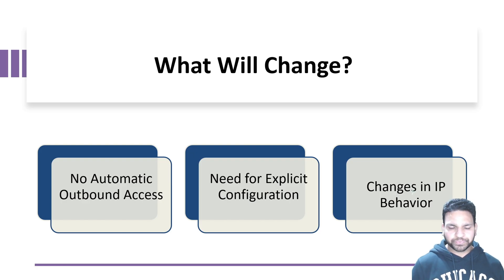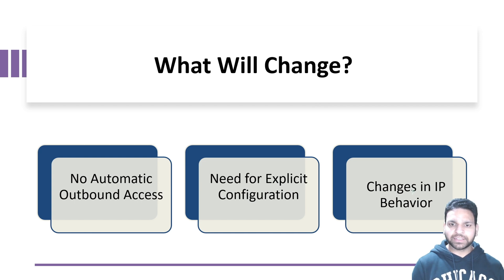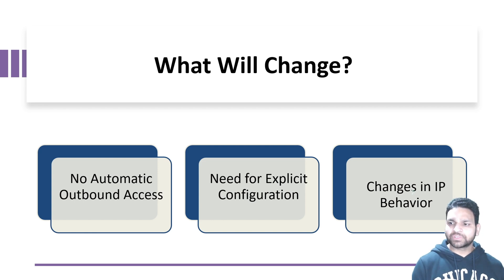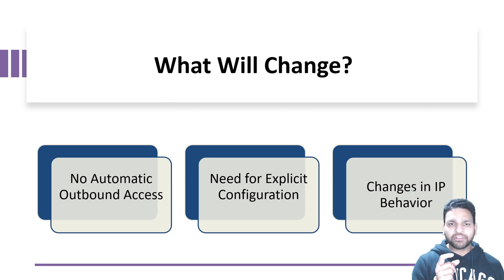What will change for you? First, no automatic outbound access — whenever you create a private virtual machine the traffic will remain private, meaning you cannot connect outside your private network. Second, you need explicit configuration: unless you have a NAT gateway, firewall, public IP address, or load balancer in your environment, traffic from the virtual machine will not go out of your Azure network. Third, changes in IP behavior: with a NAT gateway, Azure load balancer, or Azure firewall, you have a defined public IP and all outbound traffic goes through it, giving you control.